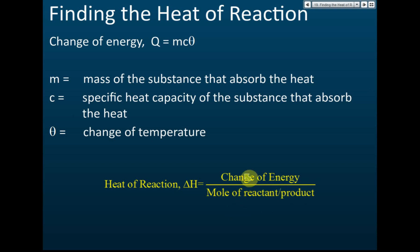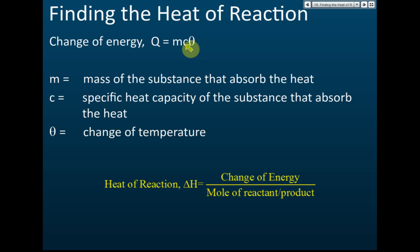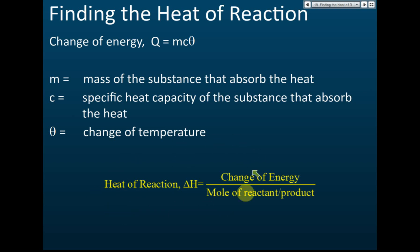For the change of energy, we calculate it using this formula — you should have learned this in Form 4. The change of heat energy: Q equals mcθ, where m is the mass of the solution, c is the specific heat capacity (in chemistry, the solution is usually water, so we use the specific heat capacity of water), and θ is the change in temperature. We use Q = mcθ to find the change of energy, then divide by the moles of reactants or product to get the heat of reactions.